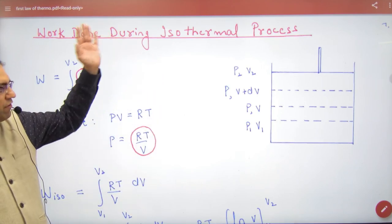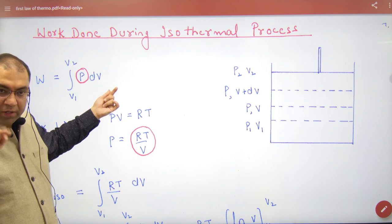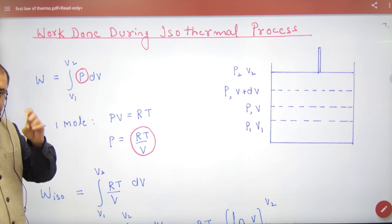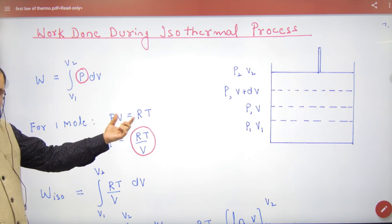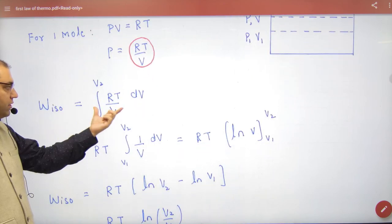Total amount of work done. If you have a small work done, then integration by V1 to V2. Because the process is isothermal and work done is 1 mole, so PV is equal to RT. Here is P value. And put it here. So you have this expression.